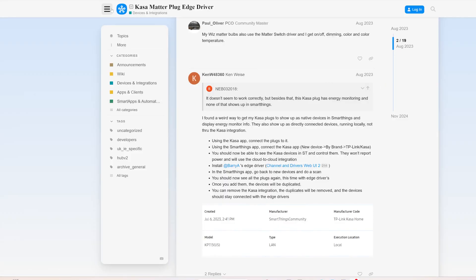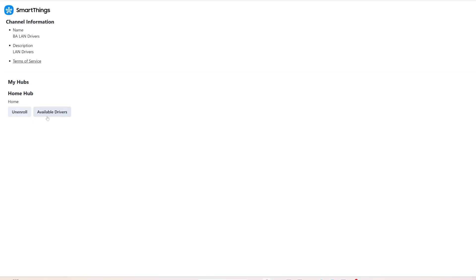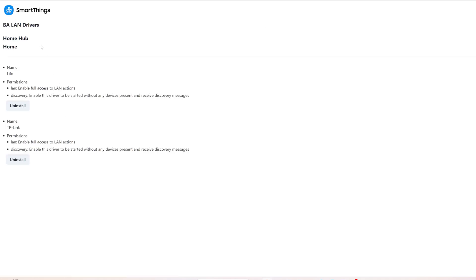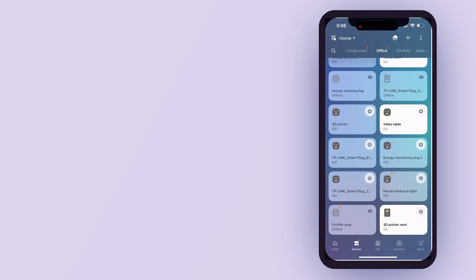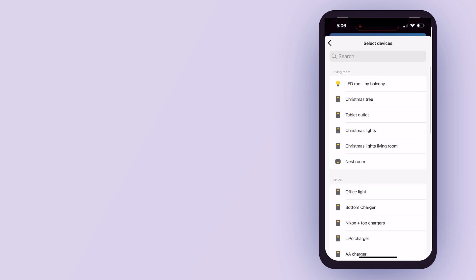Eventually I found a forum post with a working solution. You need to add the Casa devices locally to SmartThings using something called the Casa Matter Edge driver. Once installed, SmartThings lets you re-add the same devices, but this time they show the energy usage. Yes, the device is duplicated, but now I can trigger routines based on power draw.